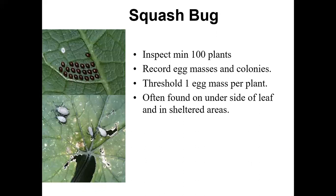You'll often see the eggs first, but the larvae are there too — they move very quickly. When fruit are present, squash bugs tend to really congregate on the fruit and can sometimes damage the handles at high populations. However, the threshold is fairly high — you can tolerate fairly high populations without a yield concern. The threshold is one egg mass per plant, so if you're inspecting 100 plants and getting 100 egg masses, you're over threshold.